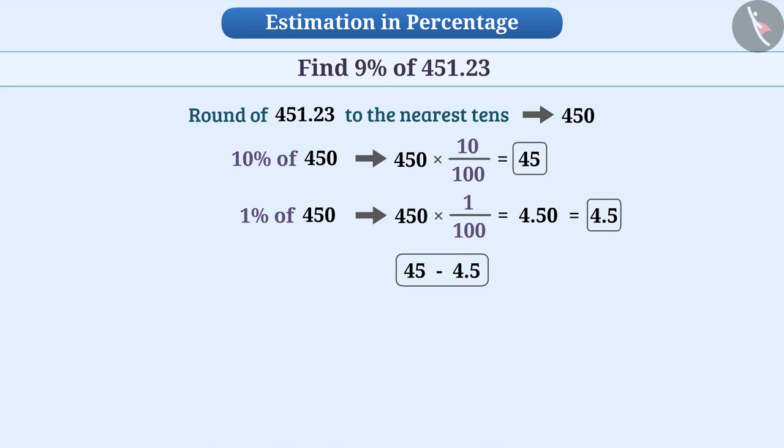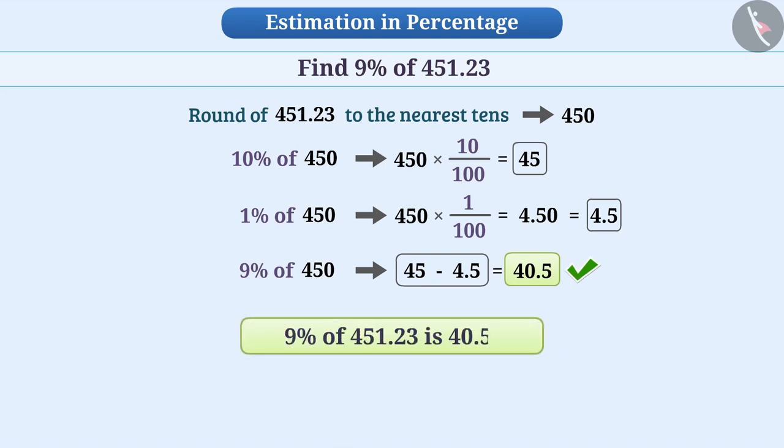So we will get 9% of 450, that is 40.5. Therefore, 9% of 451.23 is about 40.5.